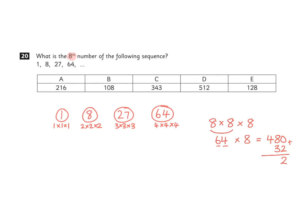2 in the units column, and then 8 plus 3 in the tens column. This makes 11, so we write 1 and carry 1 like this. 4 plus 1 in the hundreds column makes 5.